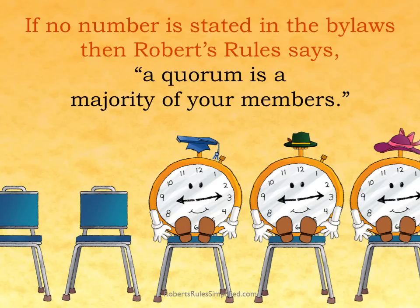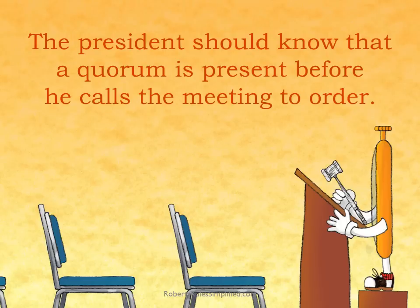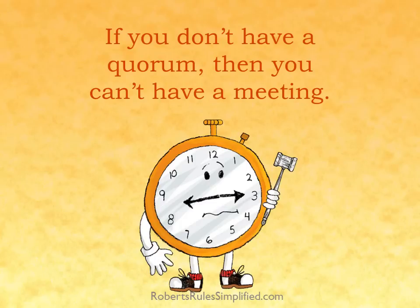If no number is stated in the bylaws, then Robert's Rules says a quorum is a majority of your members. The President should know that a quorum is present before he calls the meeting to order. If you don't have a quorum, then you can't have a meeting.